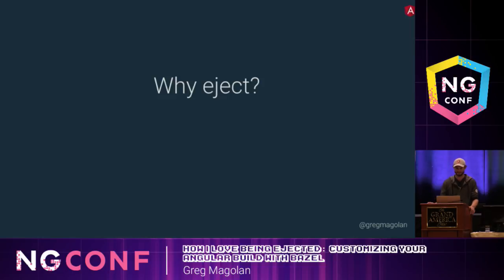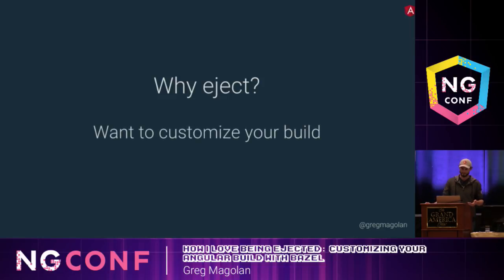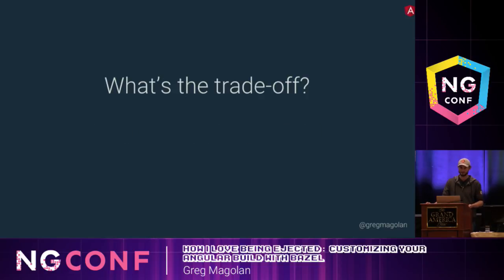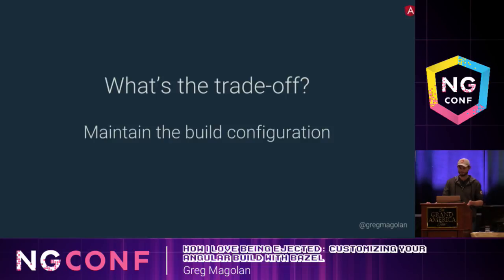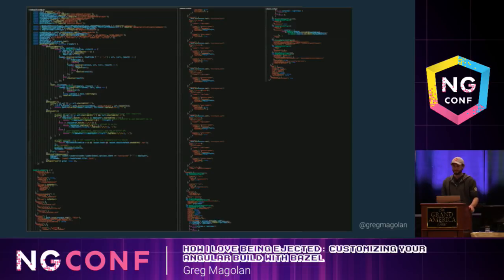Why would you eject? Well, this would usually be because you want to customize your build beyond what the CLI allows. However, there's a tradeoff, which means that you have to maintain the build configuration that the CLI previously handled for you. And this is what the build configuration looks like when you eject it from a newly created CLI project — needless to say, this can be a bit daunting to maintain if you're not an expert in the build tools in question.